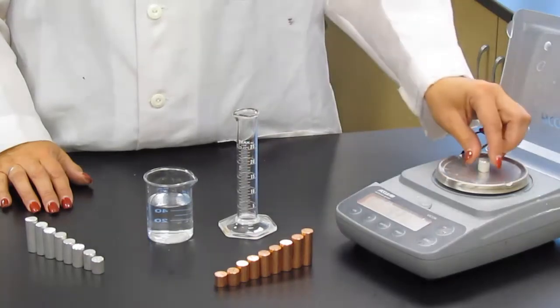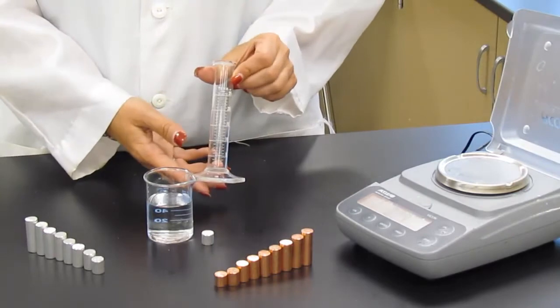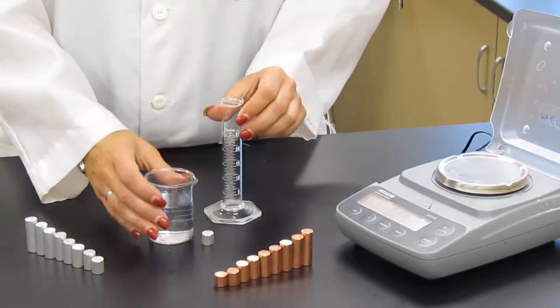Then you're going to need to find the volume. To do this, we're going to use water displacement. You'll need a graduated cylinder, a 25 milliliter would be ideal.